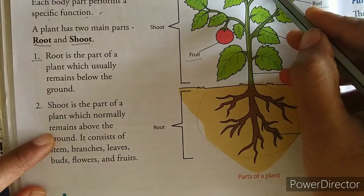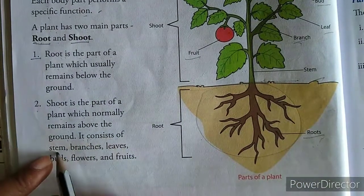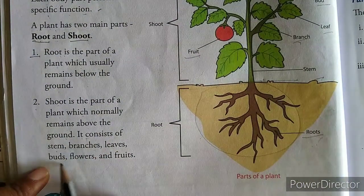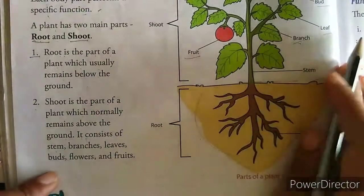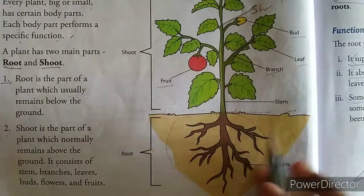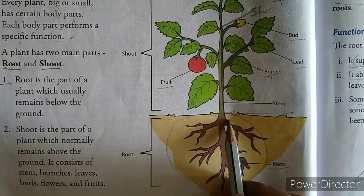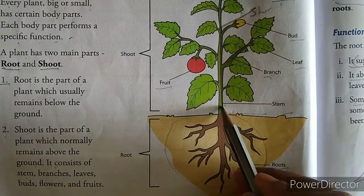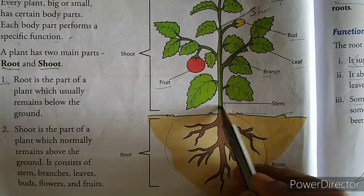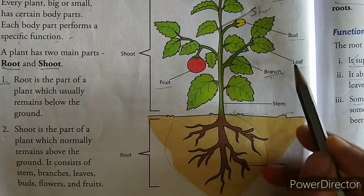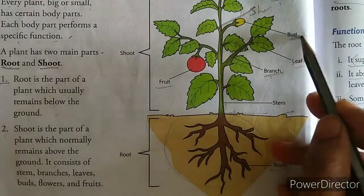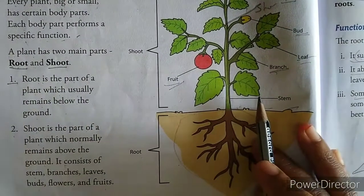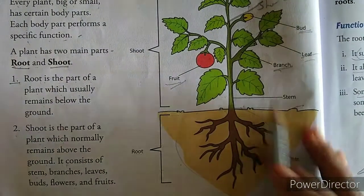The shoot consists of stem, branches, leaves, buds, flowers, and fruits. Stem se jo attached hote hain plant ke parts, wo hote hain — branch, leaf, bud, flower, fruit. Yeh sabhi stem se attached hote hain.